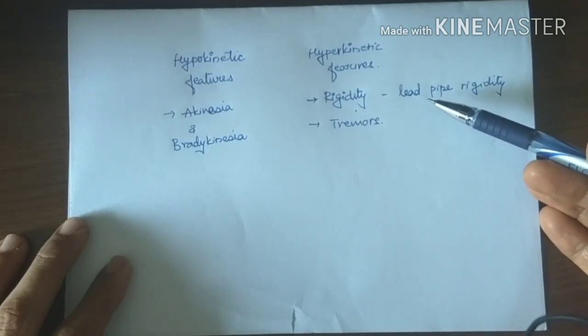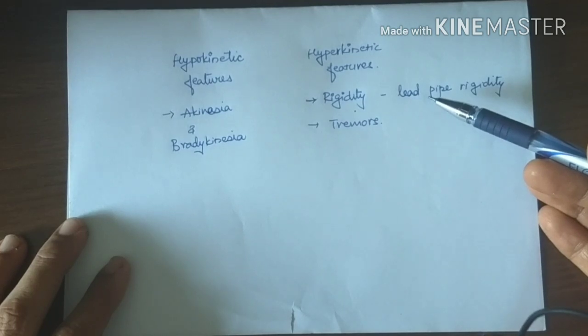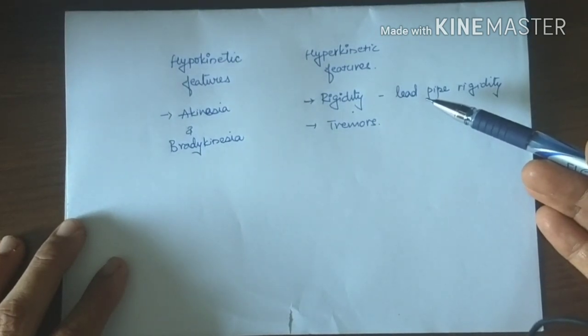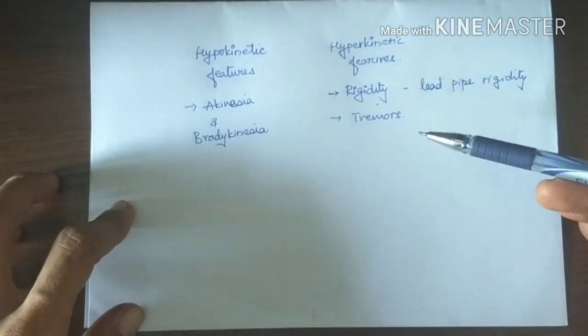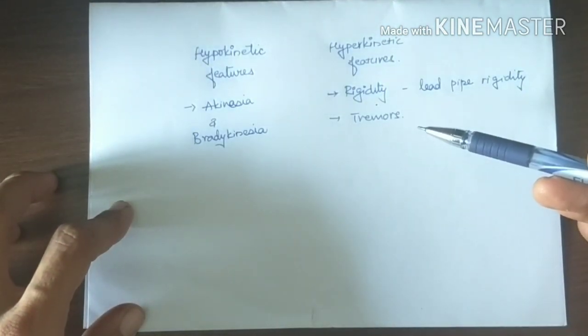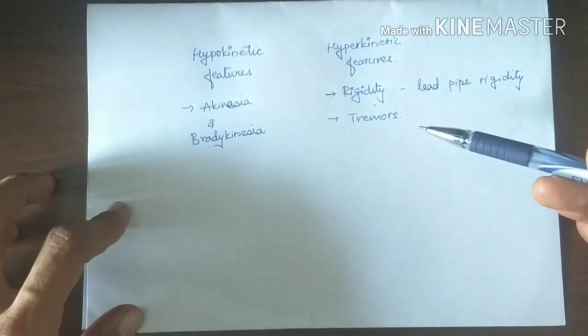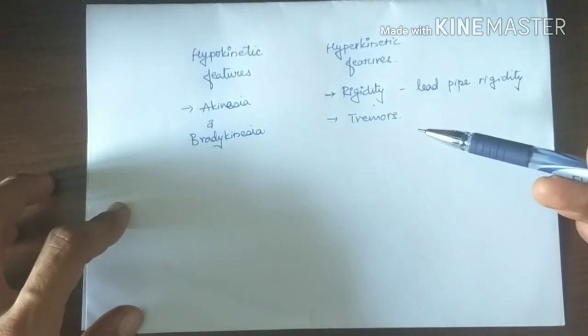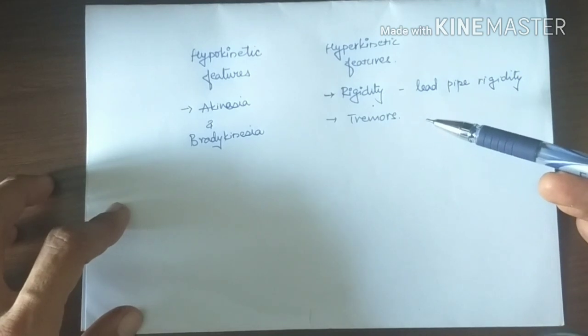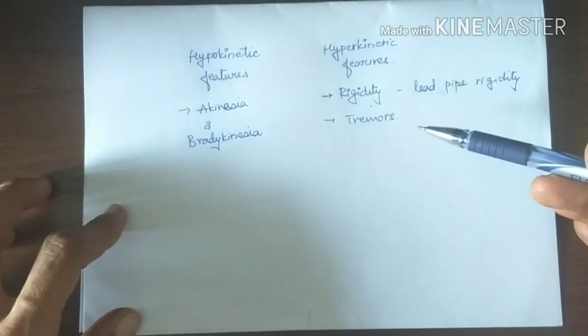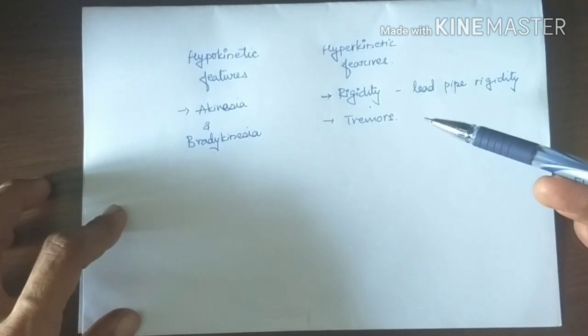When tremors are present, they are at rest and they disappear with activity. It is due to regular alternating 8 to 10 Hz contractions of antagonist muscles.